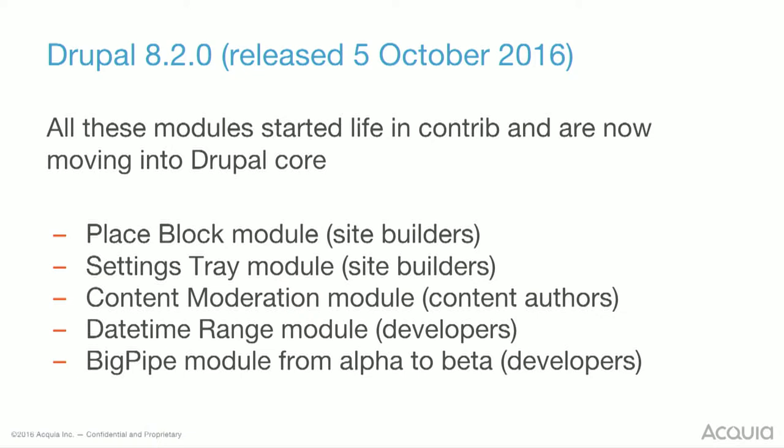8.2 just came out recently with quite a lot of new modules. Place Block is basically bringing the concept of going away from the admin back end to bring it in the front end, so you can see where you're going to place the block before placing it. The same with the Settings Tray module — there's an attempt to configure certain parts of the site while you're in the site. You've got Content Moderation (formerly Workbench Moderation), Date Time Range for start and end dates. And BigPipe got promoted from alpha to beta.